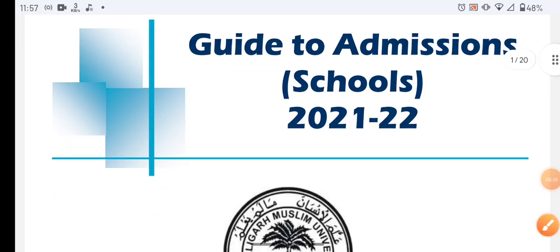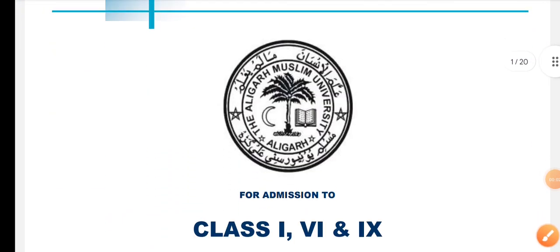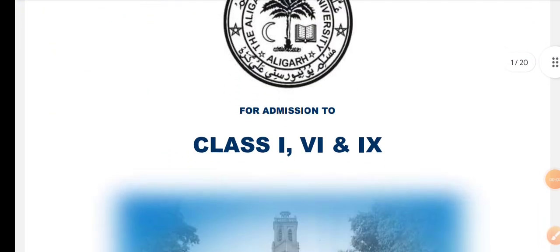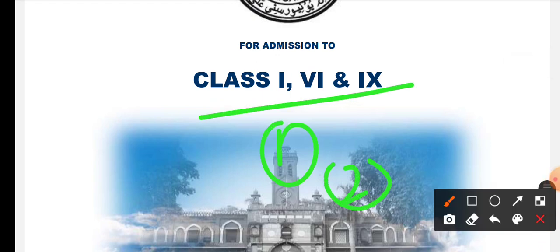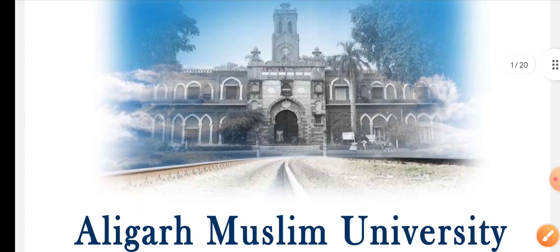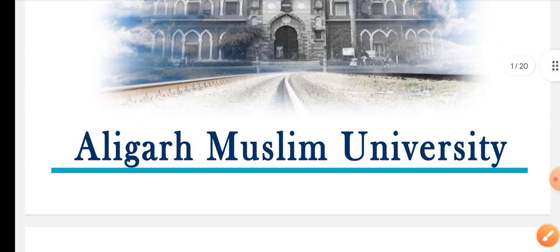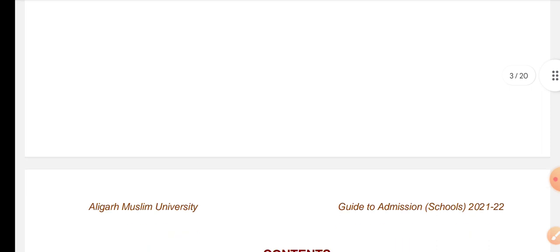Today, we want to cover the entrance exam of Western students in Aligarh Muslim University school, for classes 1st, 6, and 9. In this video, we will cover the application form, entrance exam, exam patterns, eligibility criteria, and complete details. Many students have created queries about the AMU school, and finally, the solution will be found in this video.